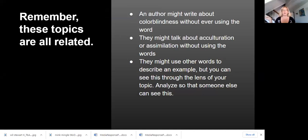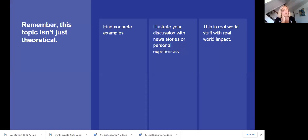All these topics are related. So an author might write about colorblindness without ever using the word. They might talk about acculturation or assimilation without using those words. They might use other words to describe an example, but you can see this through the lens of your topic. Colorblindness is a way of forcing people into the dominant culture, sadly. And so you might be writing about assimilation and what you're, you know, like the sources using the words colorblindness, but the example illustrates assimilation. These topics aren't just theoretical. So in your sources, as much as possible, find concrete examples. In your analysis of what you learn, apply it to your life or the news. This is real world stuff with real world impact. Make this as personal as you want or as objective as you want. You're going to have a lot of flexibility in this.